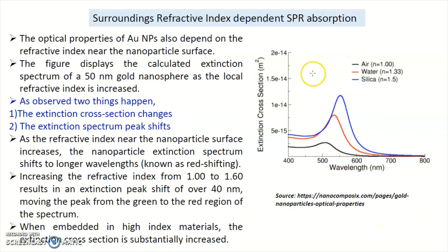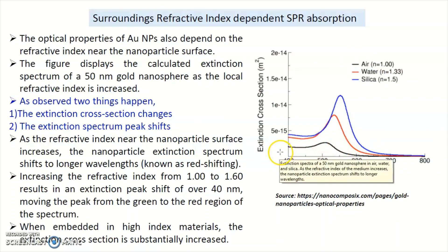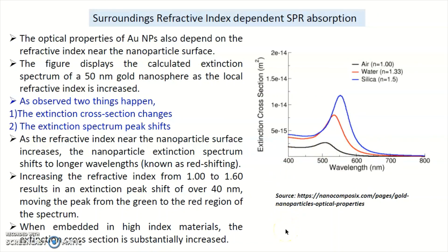When the gold nanoparticles are in air, the extinction cross-section is very small. When the gold nanoparticles are present in water, the extinction coefficient increases — meaning absorption increases and scattering becomes lower. In case of air, scattering is higher and absorption is lower. And in case of silica (SiO2), the extinction cross-section is very high, so absorption is dominant and scattering goes down.